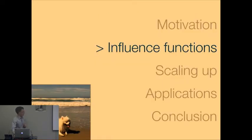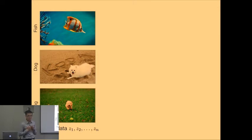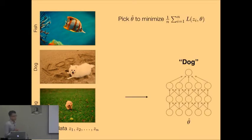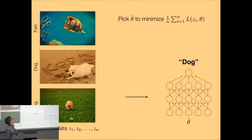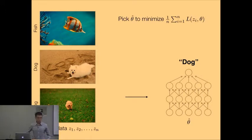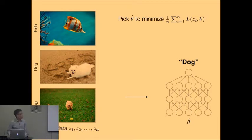So how do you actually do this? That leads us to the use of influence functions to answer that question. Let's formalize: we have training data z1, z2, all the way to zn, where each z is a pair of x and y — x would be the images and y is the label. This is our standard empirical risk minimization: you pick model parameters theta-hat to minimize some average loss over your training examples for whatever loss you want. For now we assume the loss is a nice convex differentiable loss.